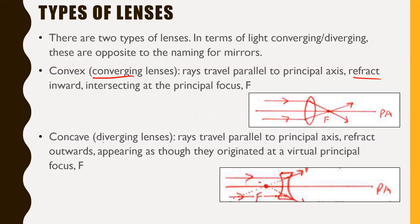Concave lenses are also called diverging lenses — again, opposite to how they were for mirrors. Concave lenses have rays travel parallel to the principal axis and then refract outwards, appearing as though they originated at a virtual principal focus F. Notice that for a convex lens, the focal point is actually on the other side of the lens, whereas on a concave lens it's on the same side that the light rays came from. This is another fundamental difference between lenses and mirrors.